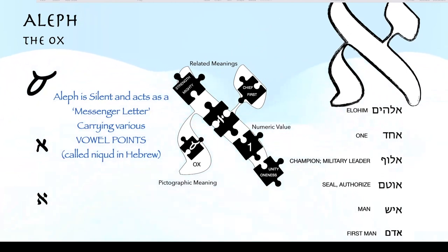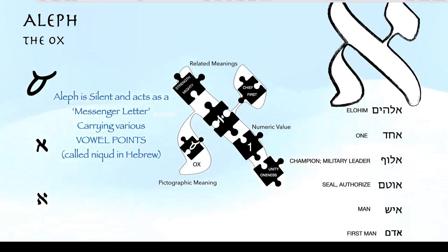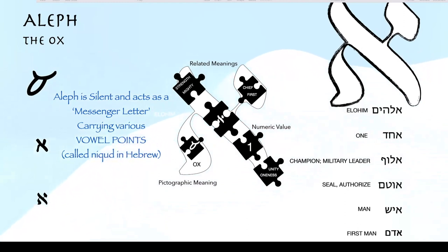It's in the word Elohim, which refers to a champion or military leader. It's in the word for to seal or to authorize something. It's in the word ish — the first man. It's in the word Adam — the first man ever created, and mankind in general, who was placed as first and head and leader over all the animals. So all of those meanings are not any kind of secret gematria. They're just helping you understand the Aleph from a personal perspective — what is the Aleph, what is its function, and what does it do?